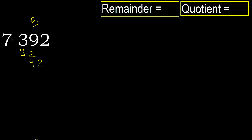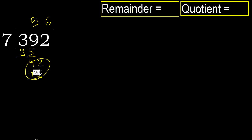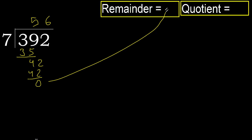Bring down: 42. 7 multiplied by 6 is 42 — 42 is not greater. OK, subtract: 42 minus 42 equals 0. Next — there is no more number, therefore finish.